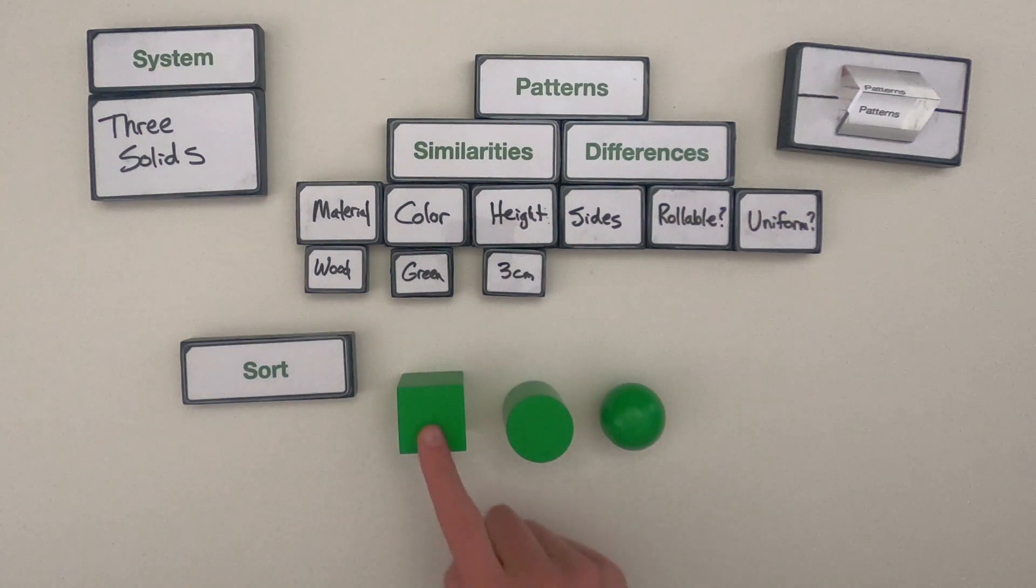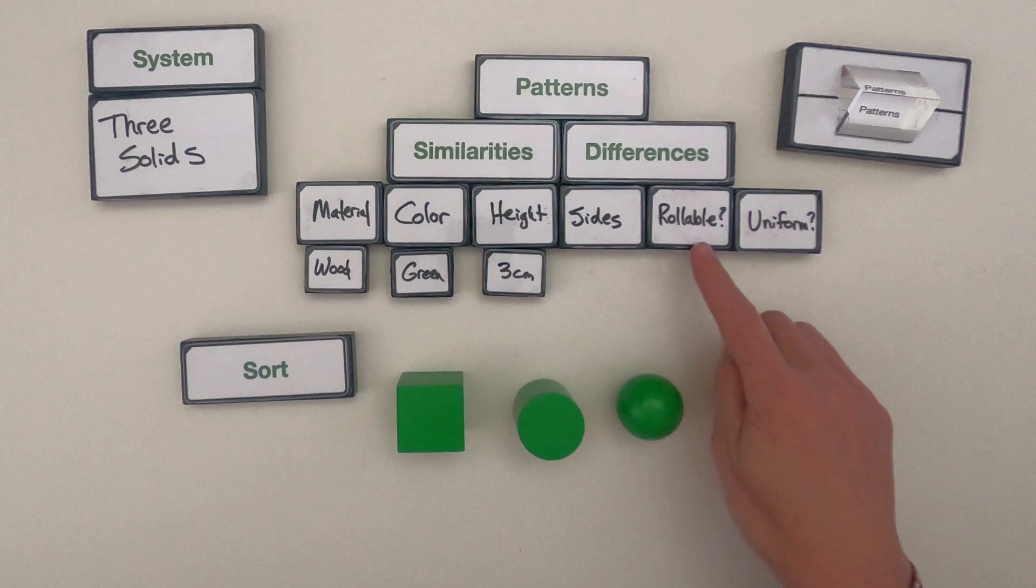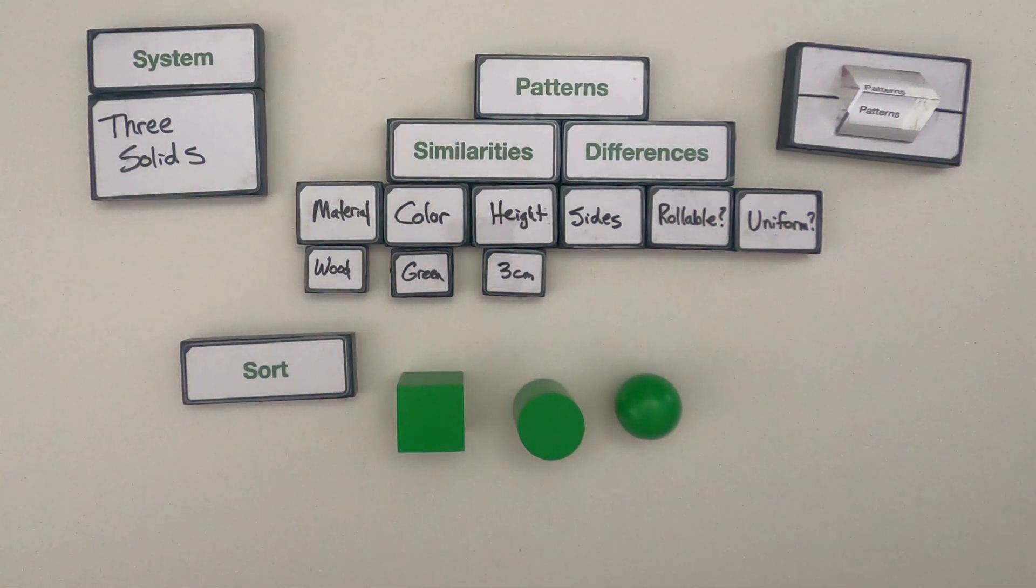So three things that I've noticed are the number of sides that they have like a sphere doesn't have any sides. Are they rollable? And then are they uniform? So let me write these down below.